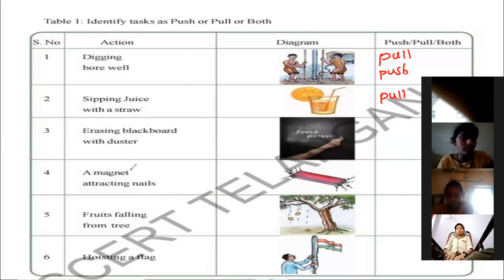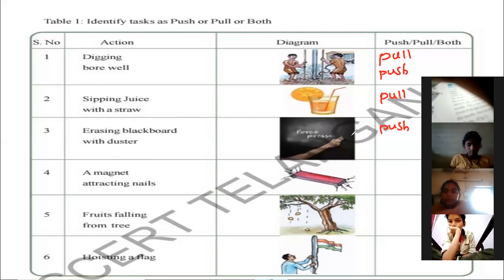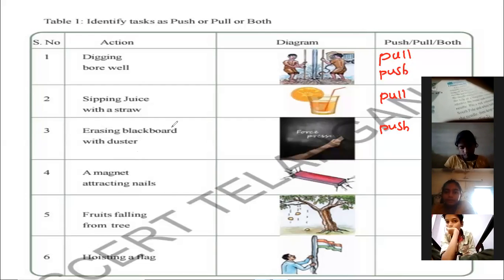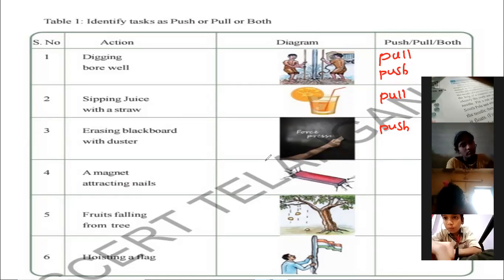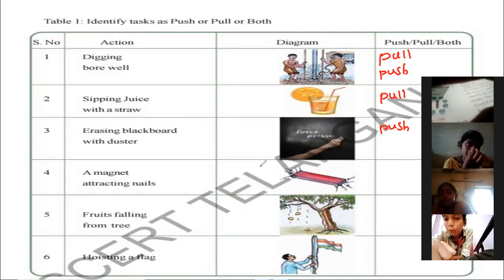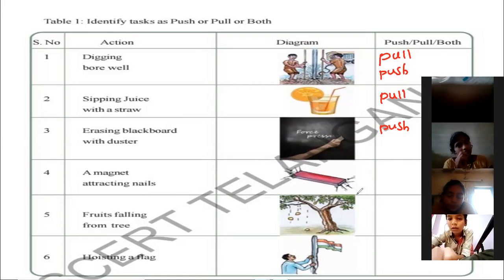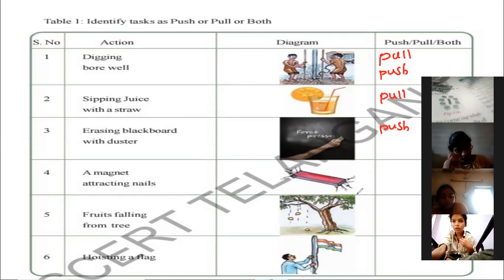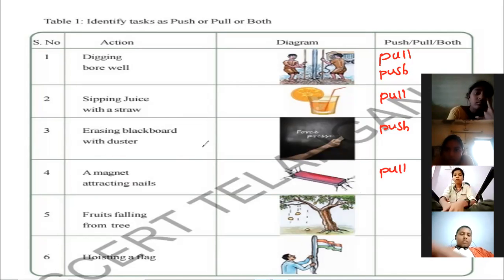Tishma, erasing blackboard with duster — student: push, teacher. Push. Not pull? Yes, teacher. And sipping juice with a straw: pull only, teacher. Okay. Next, Mudabir — magnet attracting nails. Student: pull, teacher. Pull. What about erasing blackboard with duster? Push. Push, okay. Next, Saideja — fruits falling from tree. Student: push, teacher. Magnet attracting nails — pull, teacher. Pull only.